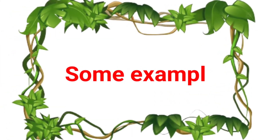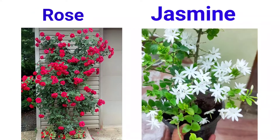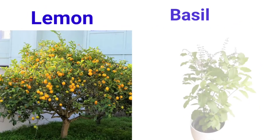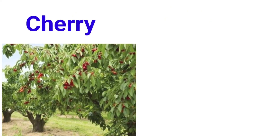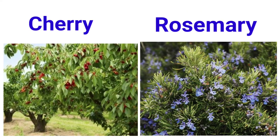The lifespan of these plants usually depends on the species. Some examples are rose, jasmine, lemon, basil, cherry and rosemary.